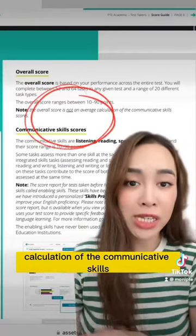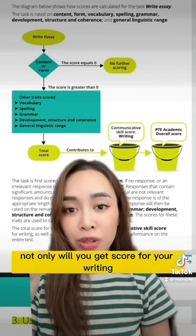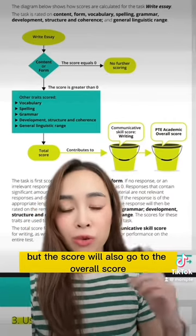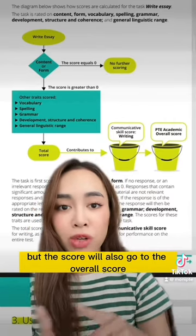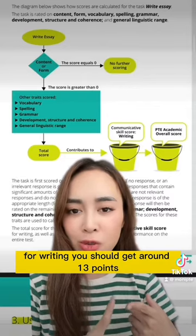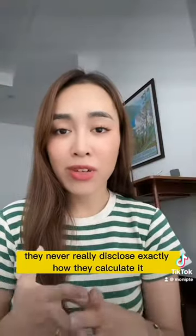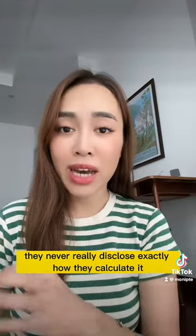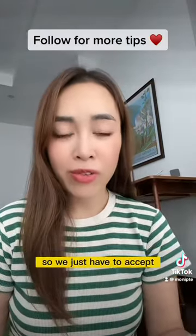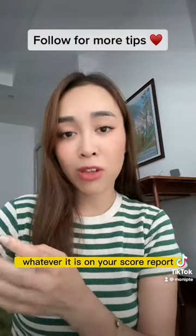For example, if you do writing, not only will you get a score for your writing, but that score will also contribute to the overall score. Normally for writing you should get around 13 points. They never really disclose exactly how they calculate it, and it depends on how many questions you have, so we just have to accept whatever is on your score report.